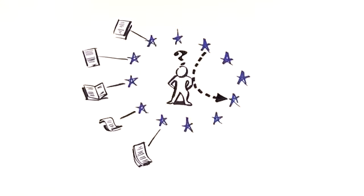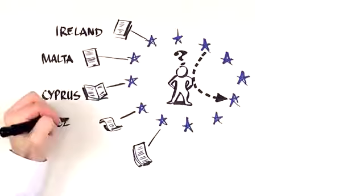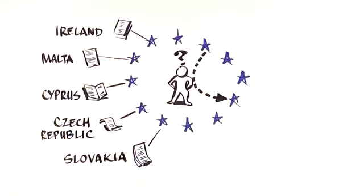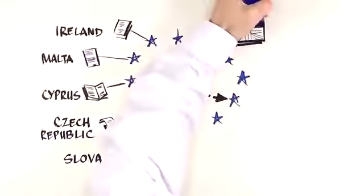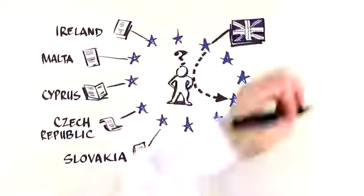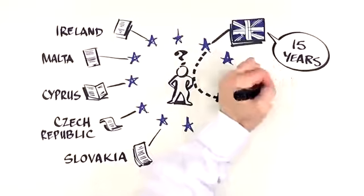In fact, this will be the case if you're from Ireland, Malta, Cyprus, Czech Republic or Slovakia, even if you live elsewhere in the EU, and also if you're from the UK but have not lived there for the past 15 years. You simply lose your voting rights in the UK.